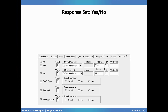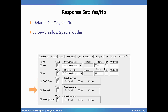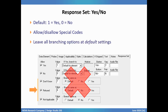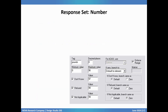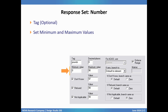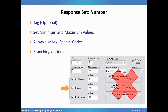Next we'll take a look at different types of response options. For questions that anticipate a yes or no response, you'll use that type. By default, 1 equals Yes and 0 equals No. Beneath that, you'll want to check or uncheck to allow or disallow special codes, and as mentioned, you should leave all branch options at default settings. Another type that is very common is Number. The key options to set here are an optional tag which can provide an on-screen label for what's being entered — for example, times, number of people, or pounds. It's only for display and not saved into the dataset. You'll always want to set minimum and maximum values that make sense for your question, and specify whether or not to allow special codes.